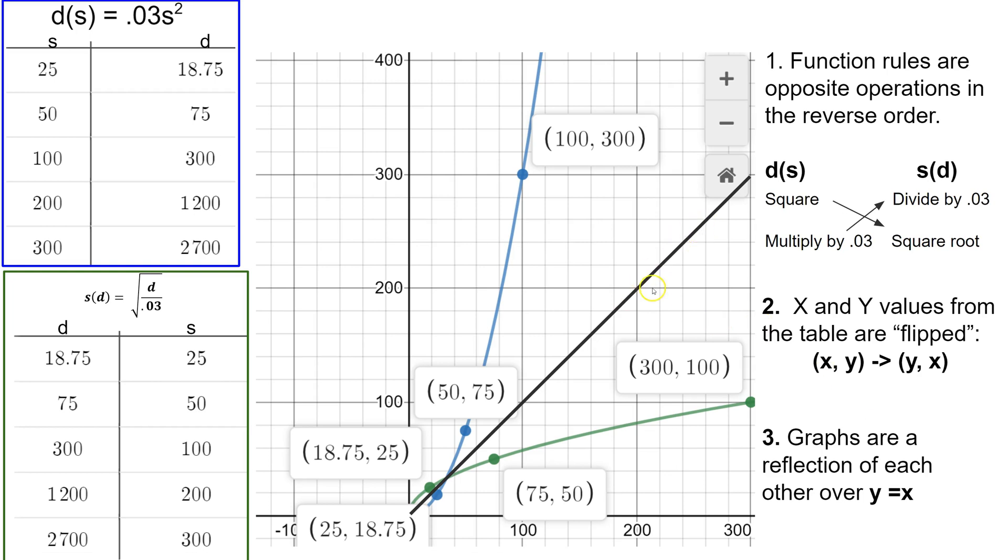And finally, the graphs are a reflection of each other over the line y equals x. As you can see, I've drawn the line y equals x here to make that clear. So since all three of these things are satisfied, we know that that means these are inverse functions. d of s is the inverse of s of d.